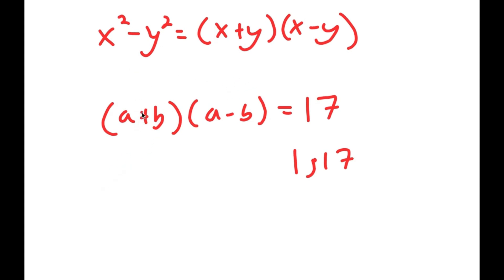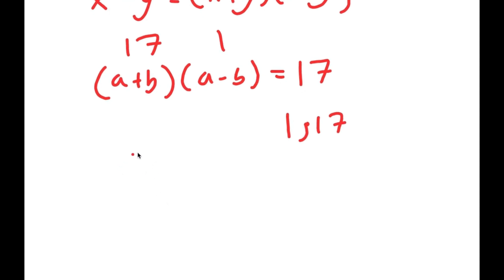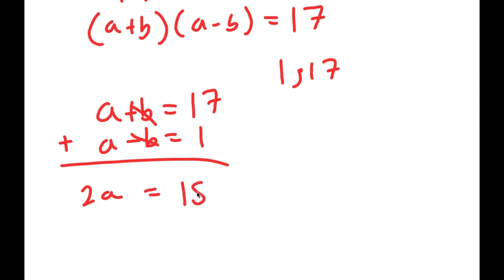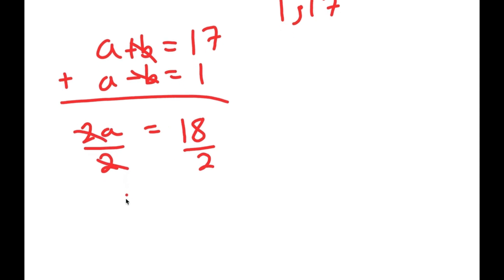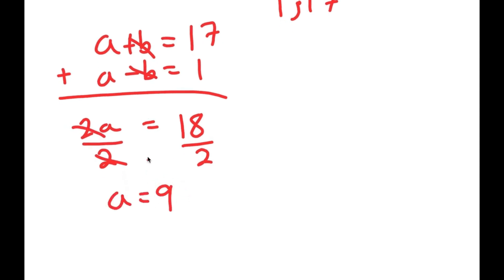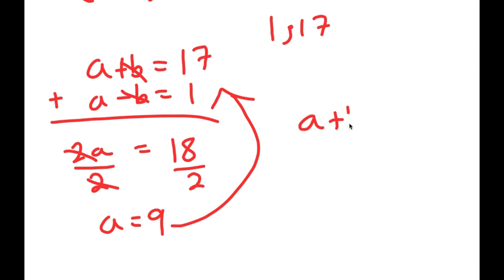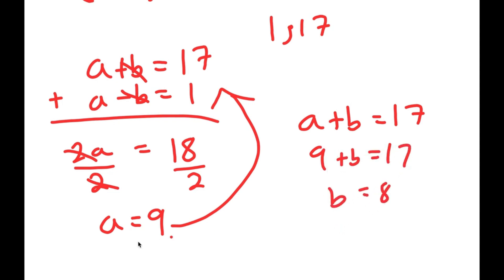Since a plus b is greater than a minus b, a plus b is going to be 17 and a minus b is going to be 1. So I have two equations: a plus b equals 17 and a minus b equals 1. Adding these two equations together, a plus a is 2a, b minus b cancels out, and 17 plus 1 is 18, so 2a equals 18, and dividing both sides by 2, a equals 9. Plugging back in, 9 plus b equals 17, meaning b equals 8.